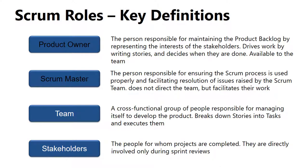Key Scrum role definitions to remember. First, the product owner: this person is responsible for maintaining the product backlog and ensuring stakeholder interests. They drive work by writing stories and deciding when they're done. Think of a story as a user story — for example, a user working on a software piece during a sprint might write a story about missing functionality or an incorrect UI design.